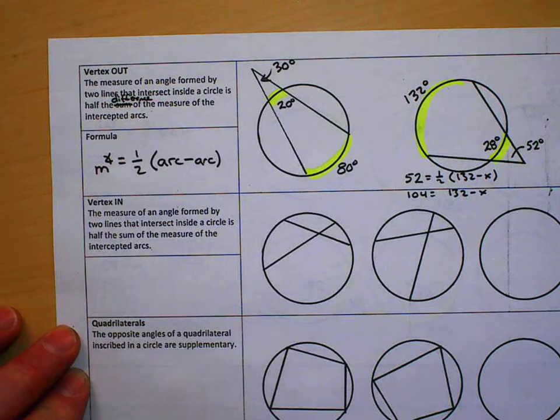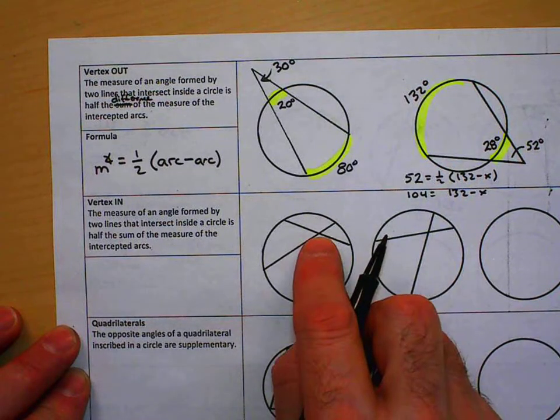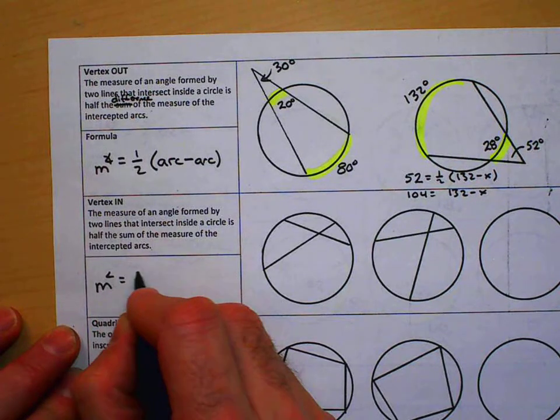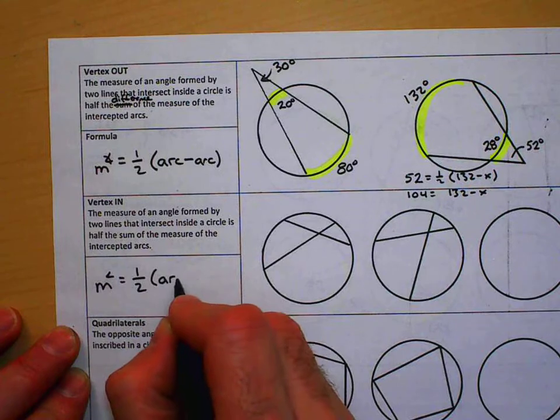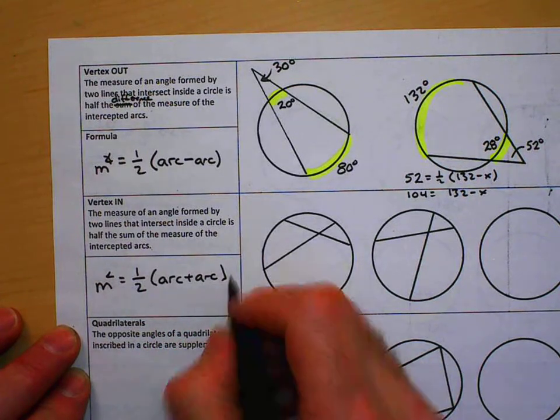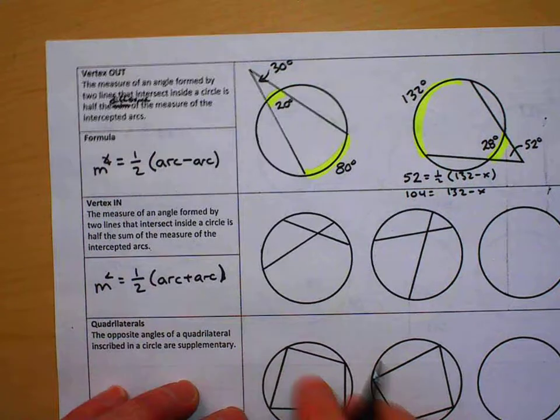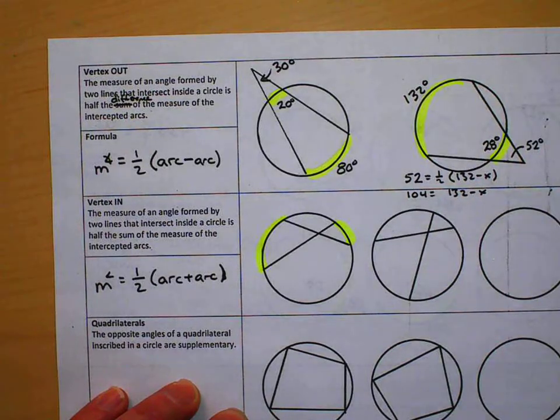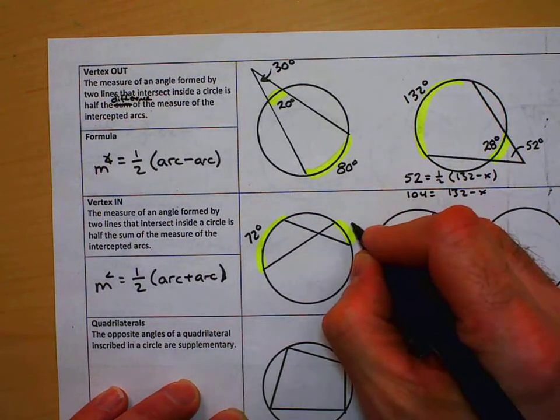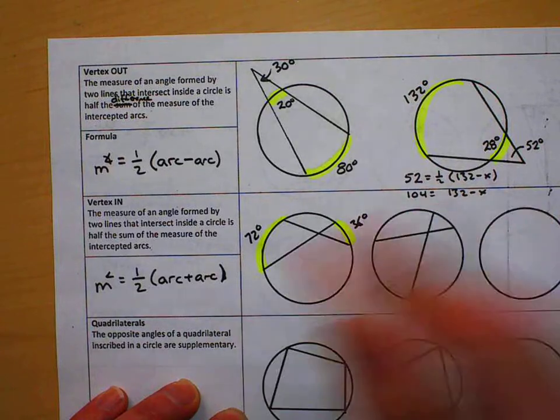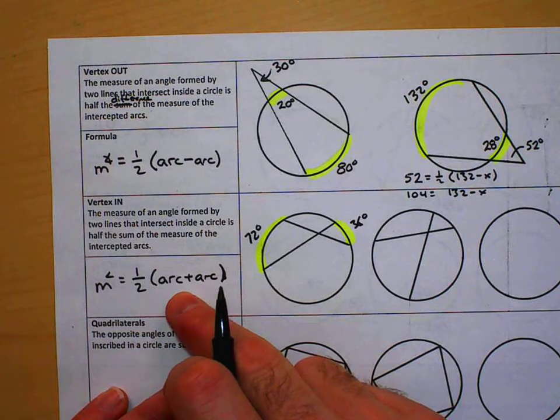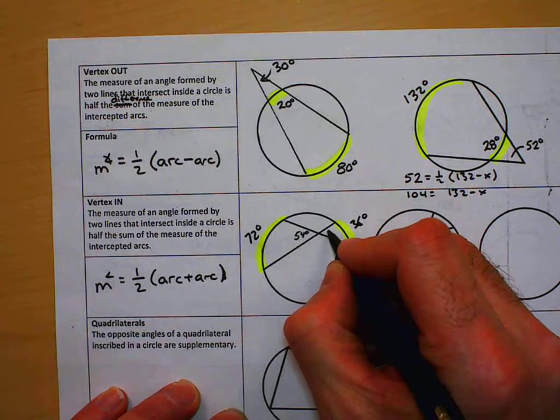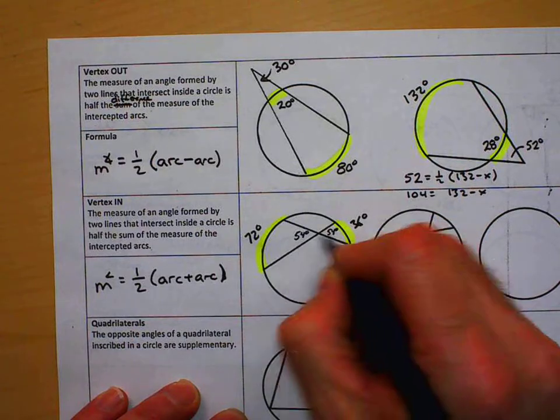Now, vertex in. If the vertex is inside the circle, we have a measure of the angle will equal one half the sum of the two arcs—arc plus arc, two intercepted arcs. So if we have these as our intercepted arcs and we were told one was 72 and one was 36, we add those together, we get 108. That's going to be 108. Half of that's 54. So that means this angle is 54 degrees as well as this vertical angle is 54 degrees.